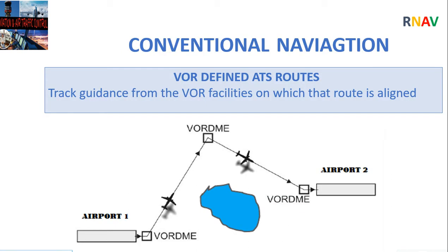Conventional navigation is based on ground-based aids including VOR and DME, which limit routes and procedures to their physical locations. Aircraft wishing to fly straight from Airport 1 to Airport 2 face a problem — VOR cannot be placed on a water body, so a VOR is installed off the direct route. Thus aircraft must navigate from departure to an en-route VOR and then to the destination.